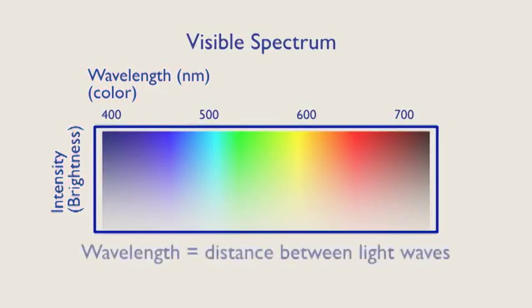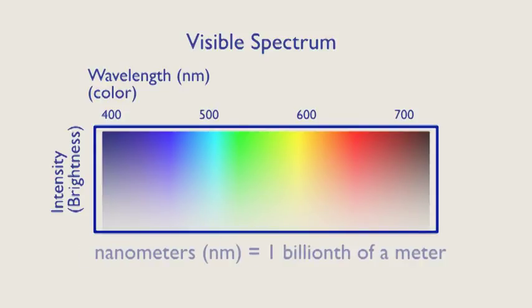The wavelength is the distance between successive light waves which our visual system interprets as color. The distance from wave peak to wave peak is measured in units called nanometers (nm), which are one billionth of a meter.